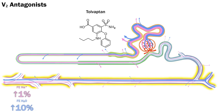Finally we have the aquaretics such as tolvaptan, which cause almost pure water excretion by blocking vasopressin V2 receptors in the collecting duct. This can cause a tiny natriuresis of about 0.5% fractional excretion, as V2 receptors also upregulate NKCC2 and ENaC activity in the tubules. Their use in the correction of hyponatremia is beyond the scope of this video.